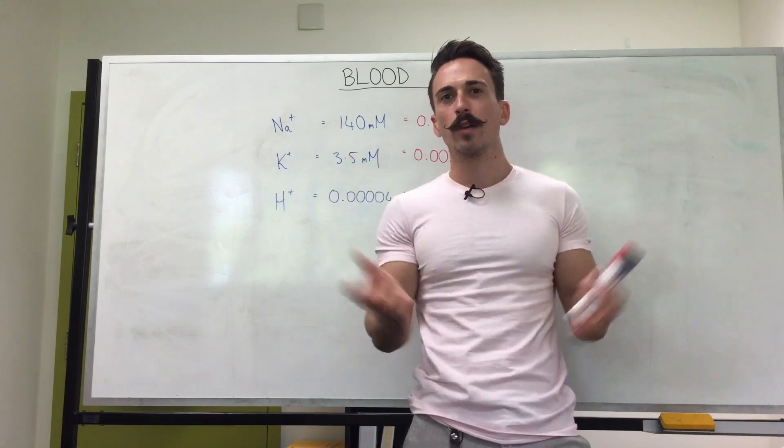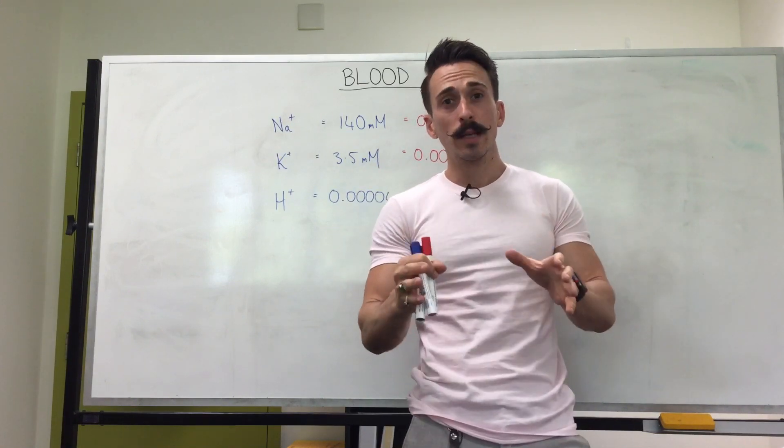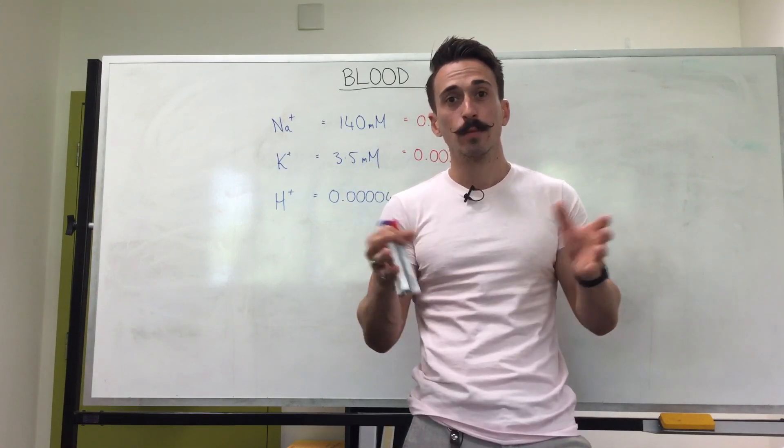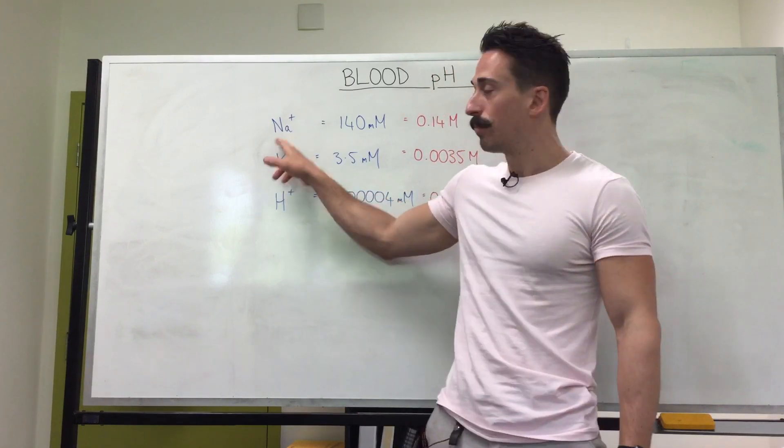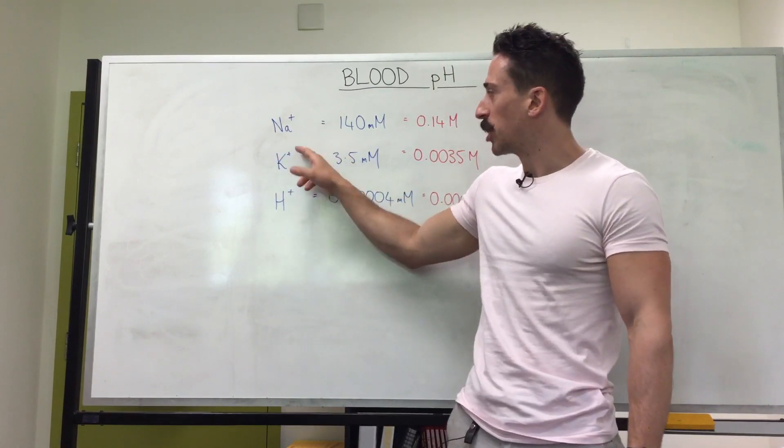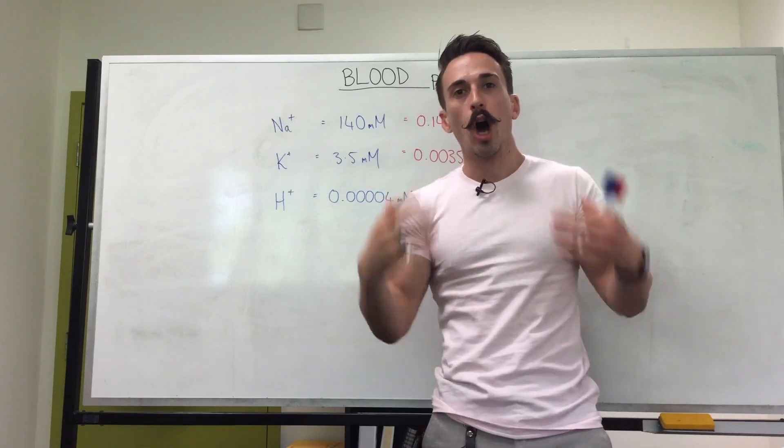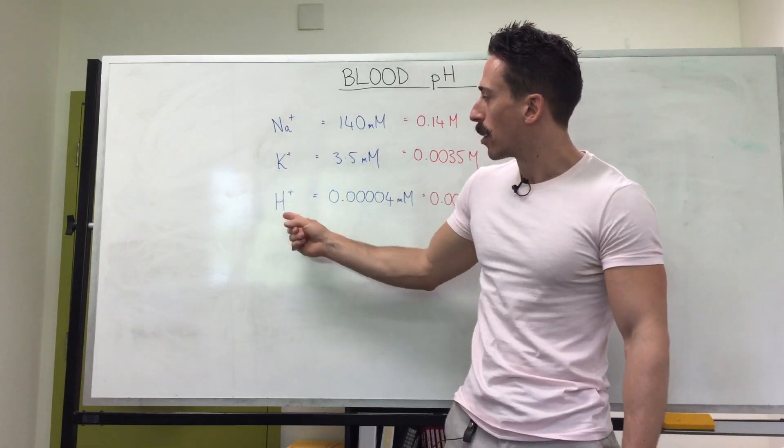Now your blood has a number of different components dissolved within it. Some of these components are charged atoms or elements such as sodium, potassium and hydrogen. You can see they have a particular charge which makes them something called an ion. So sodium ion, potassium ion, hydrogen ion.